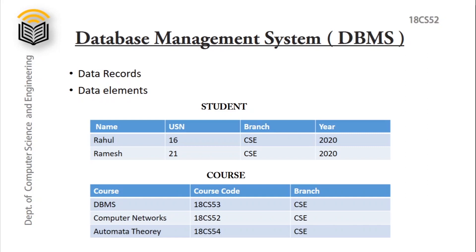Consider one more example, that is a course database system, where course, course code, and branch are data records, and others are data elements. From both database systems, some data records are common. The branch data record is common between these two database systems, so it indicates there might be a logical relationship between these two tables.